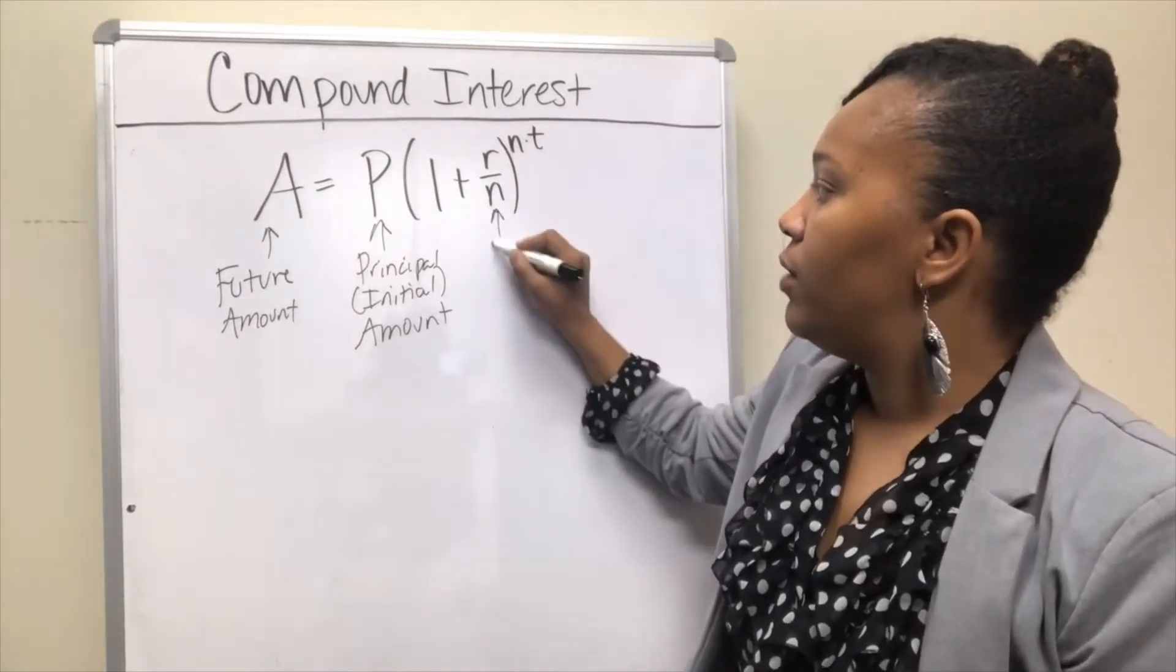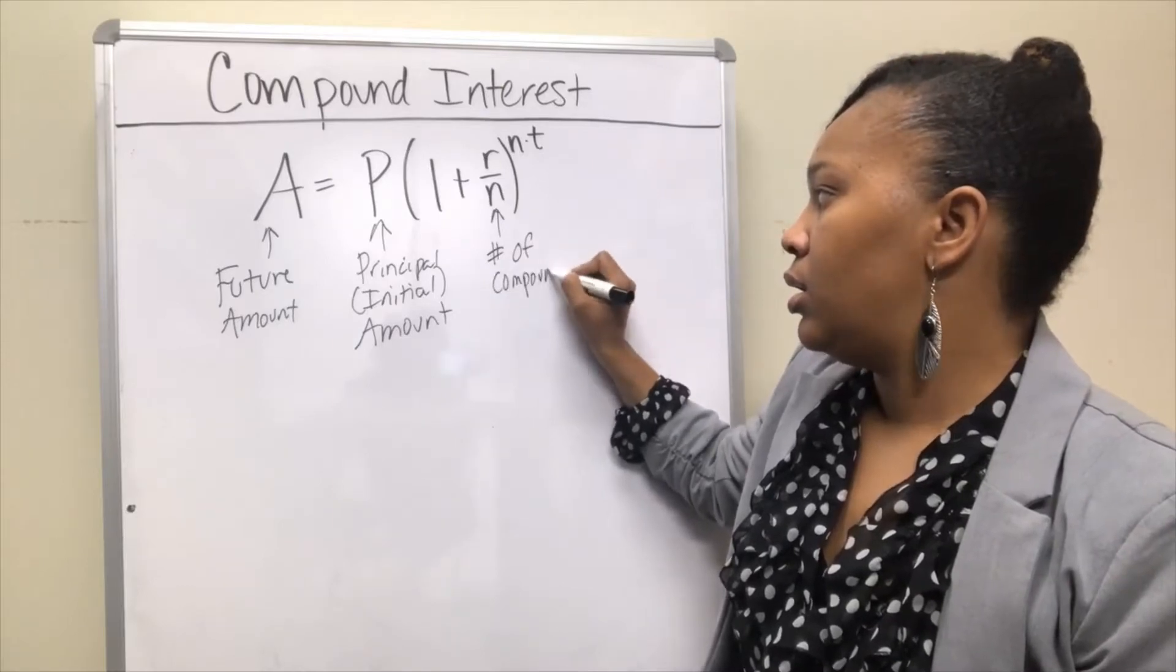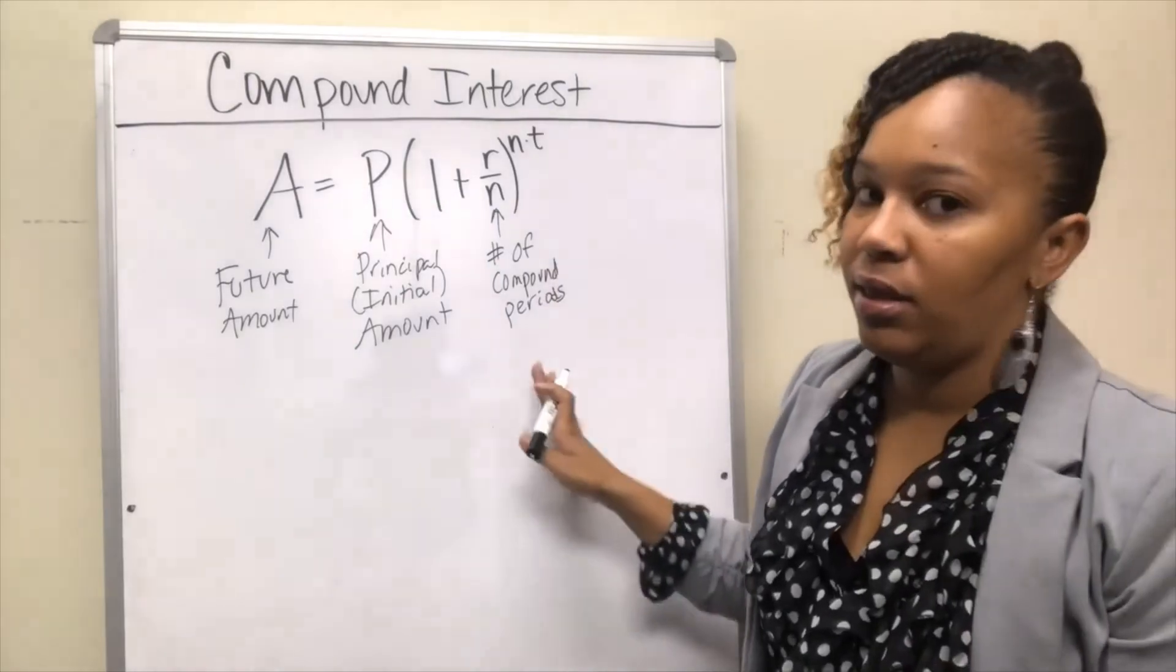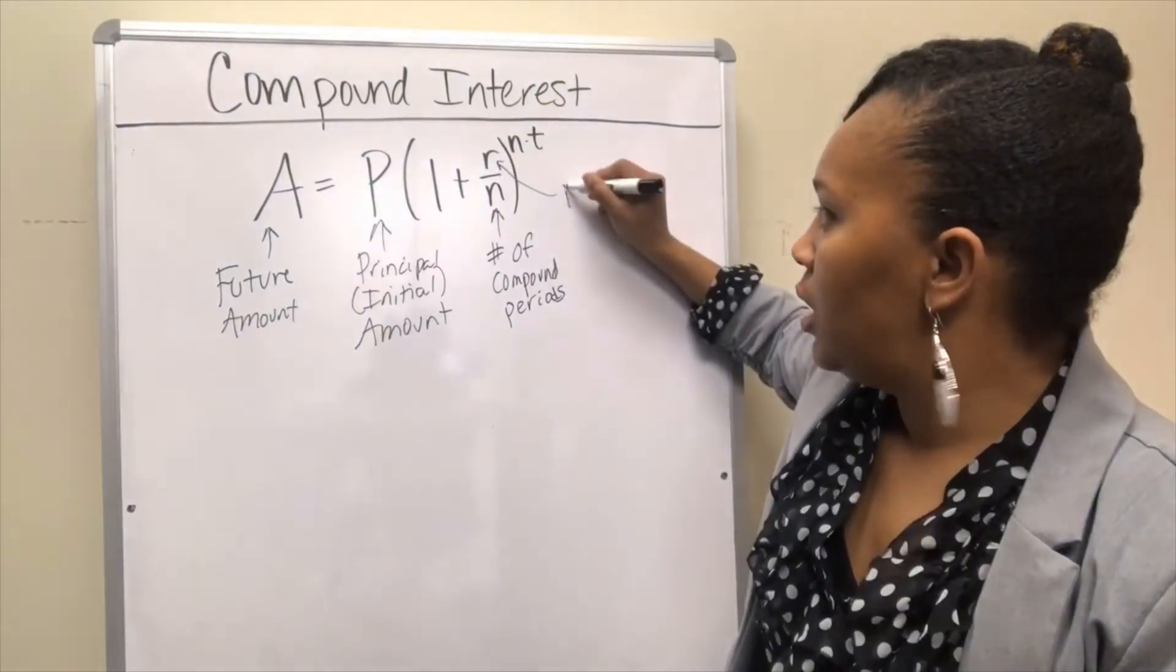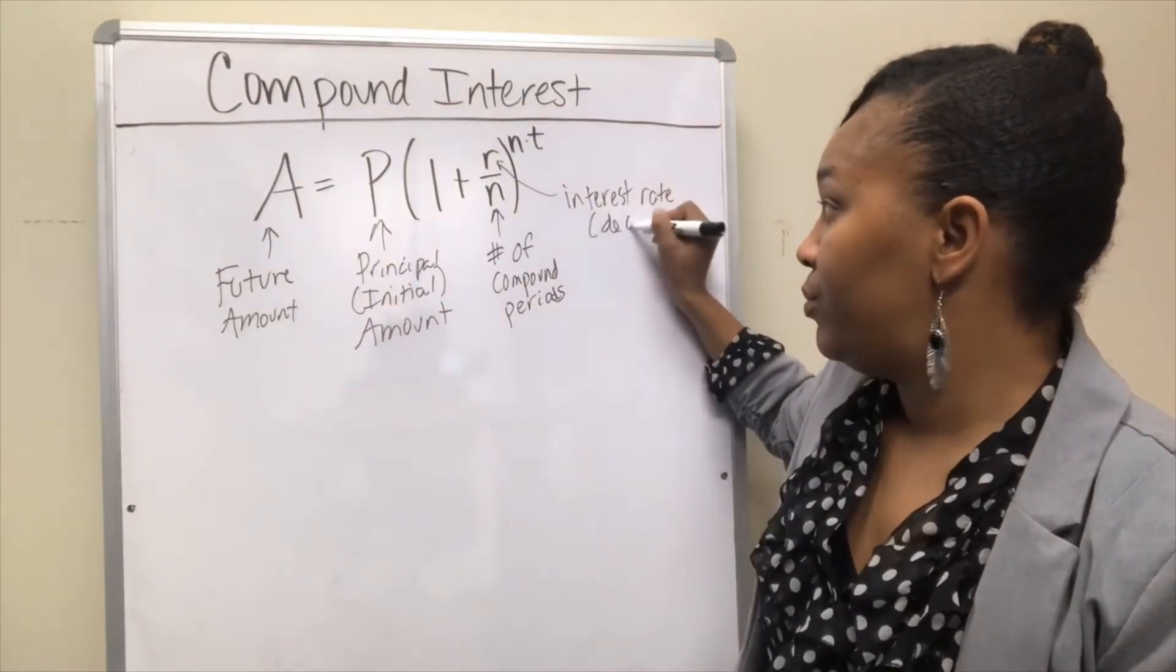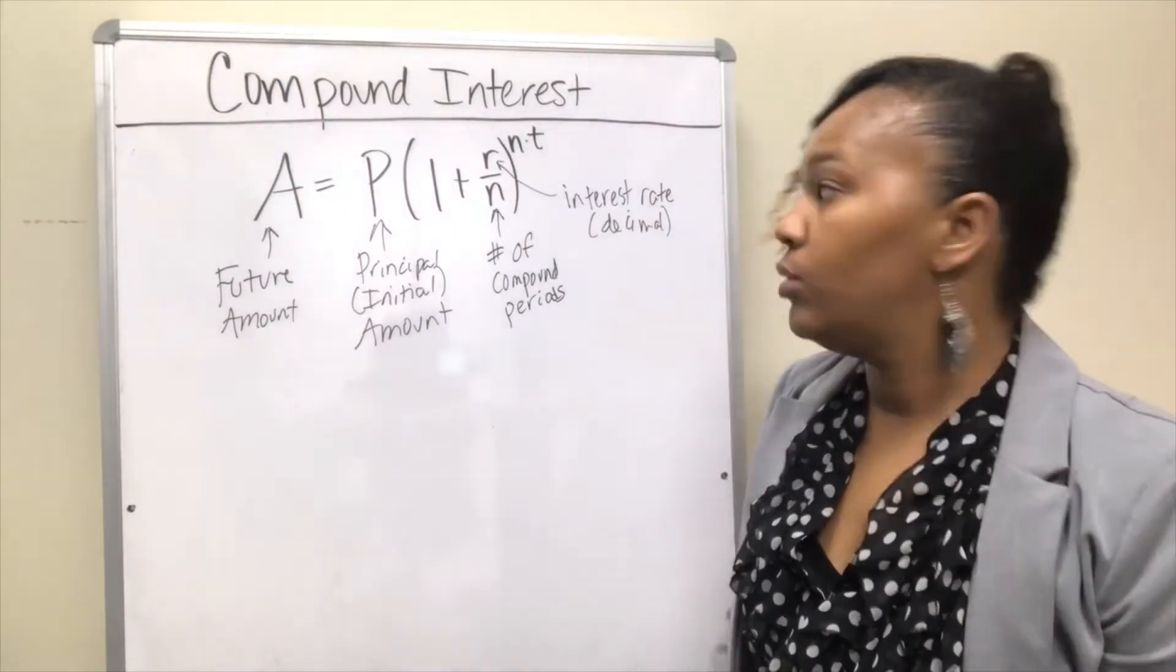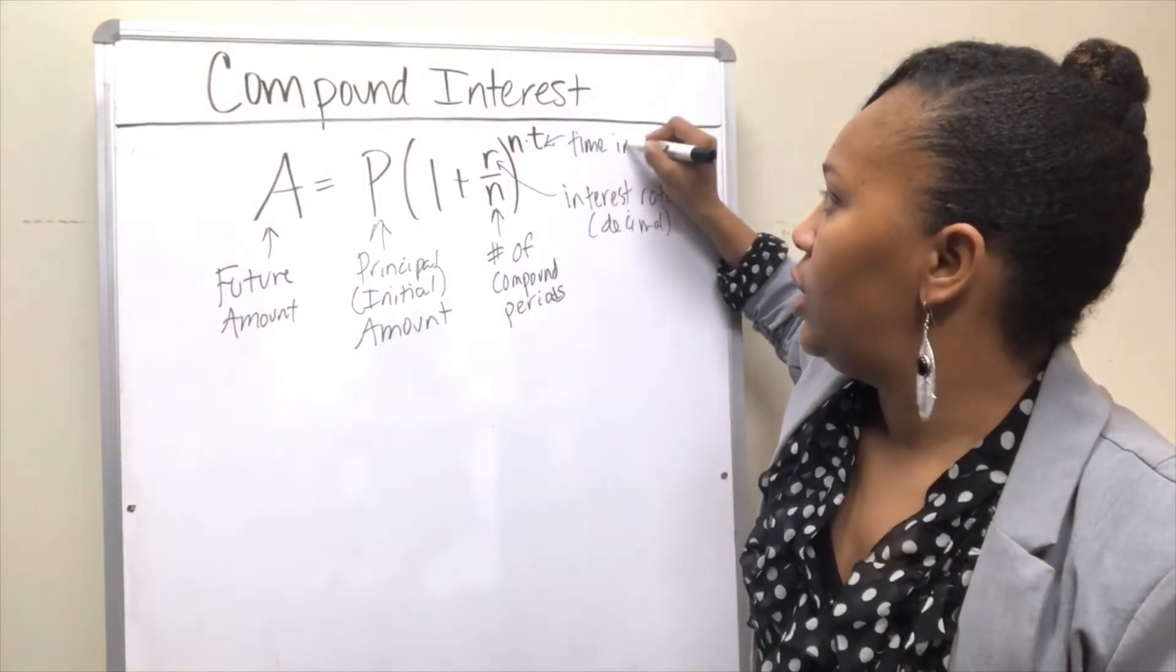N is what we call the number of compound periods. I'm going to come back and talk about N in a minute. R is the interest rate, and you always have to convert your interest rate to a decimal. T is going to be your time in years.